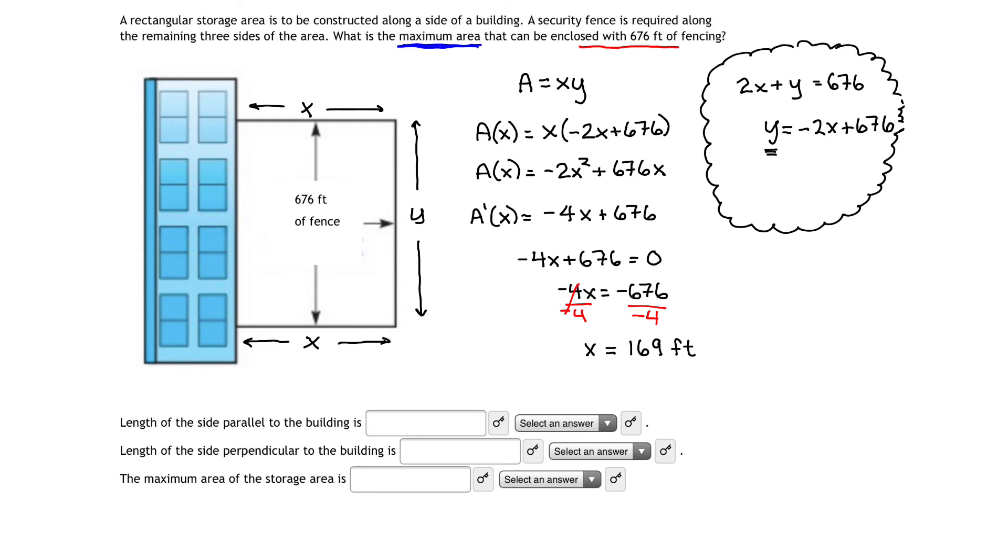Correspondingly, if I wanted to evaluate y, I would go back up here and use my relationship for y. y is negative 2 times 169 plus 676. In other words, 169 times 2 is negative 338. And adding negative 338 to 676 gives us 338. So y is 338 feet.